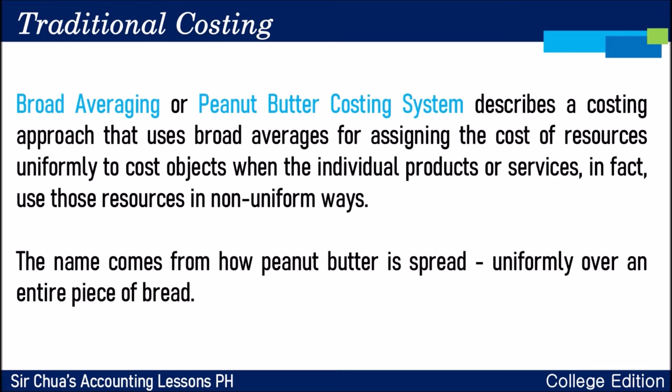Broad averaging, or peanut butter costing system, describes a costing approach that uses broad averages for assigning the cost of resources uniformly to cost objects when individual products or services use those resources in non-uniform ways. In the previous lesson, we allocated service department costs and computed a single plant-wide or predetermined overhead rate — spreading overhead like peanut butter across an entire piece of bread. A single plant-wide rate is applied to the whole production process. That is what we call traditional costing.